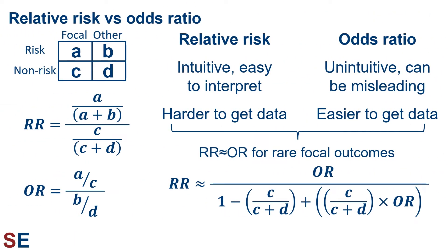Let's take a moment to look at a quick summary of these two values. We set up a grid with rows for the risk and non-risk factors, and columns for the focal outcome we care about and another for the alternatives. The equations for relative risk and the odds ratio are straightforward fractions of fractions. The relative risk is intuitive and easier to understand, but harder to get data for in the real world. The odds ratio values are unintuitive and can be misleading, but it's easier to get odds ratio data in the real world. The relative risk and odds ratio are roughly equal when the focal outcome is rare, and there is an equation we can use to relate these two values to each other.